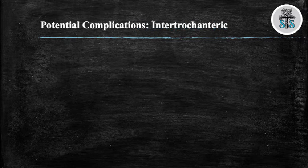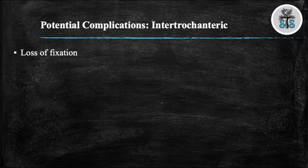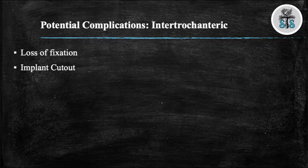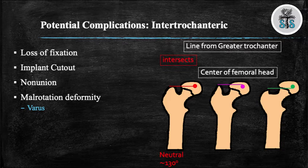There are several complications that can occur when treating IT fractures: loss of fixation or failure of your implant, implant cutout, and non-union. The tip-to-apex distance of less than 25 mm can help minimize the risk of screw cutout, which will usually occur within the first 3 months from surgery. Varus deformity can occur in 20% of unstable fractures. As a medical student, the two landmarks to determine varus or valgus are the proximal aspect of the greater trochanter and the center of the femoral head.